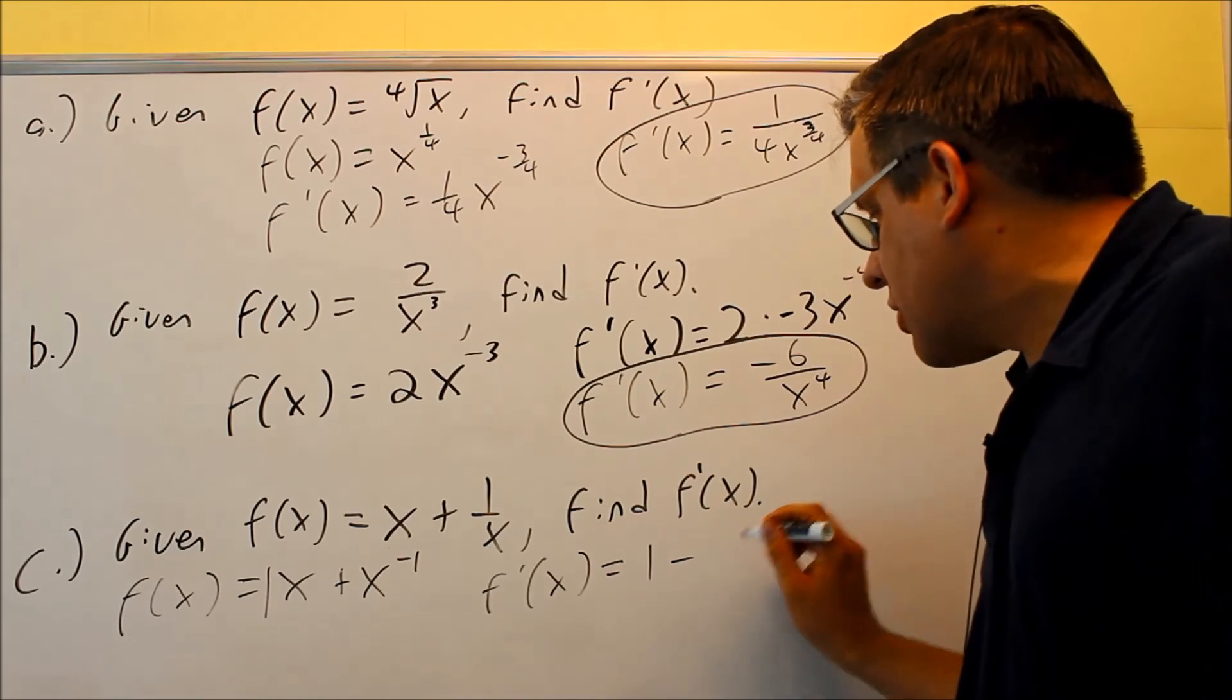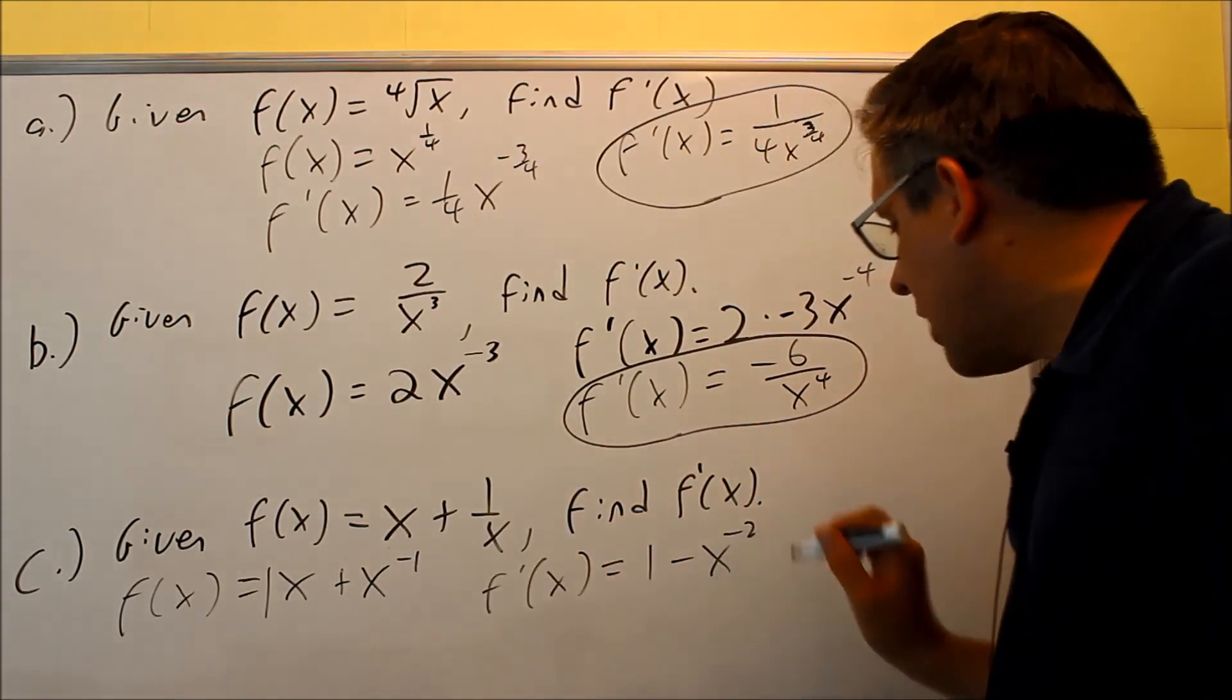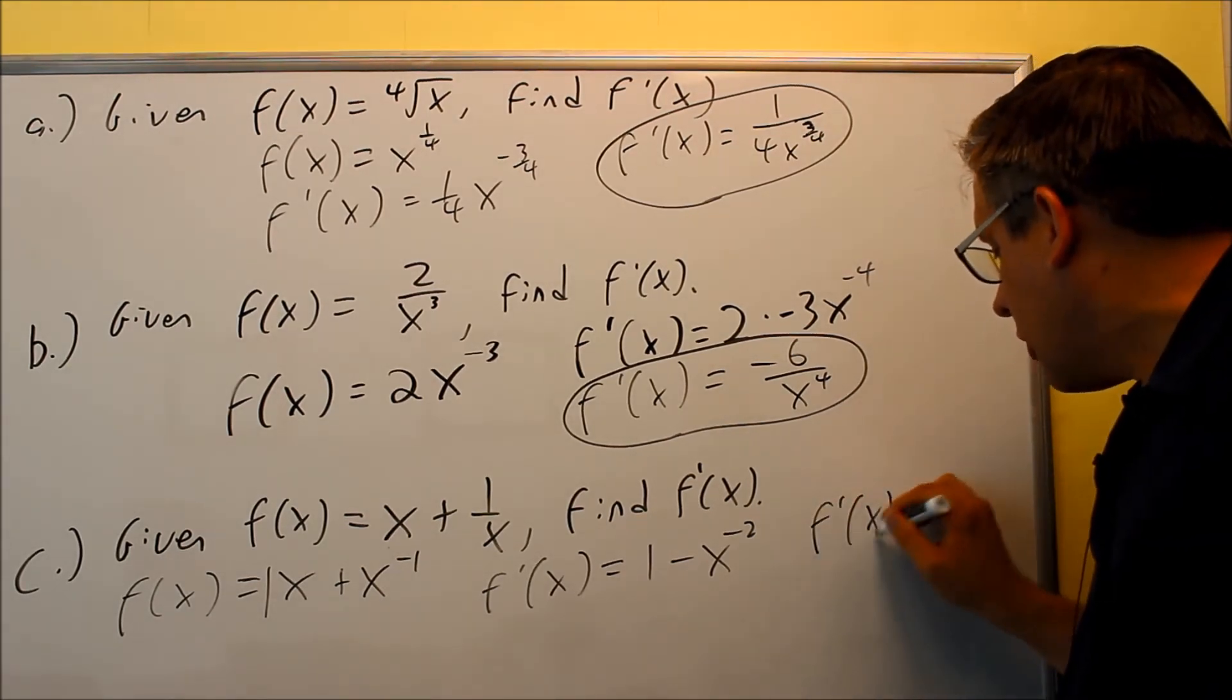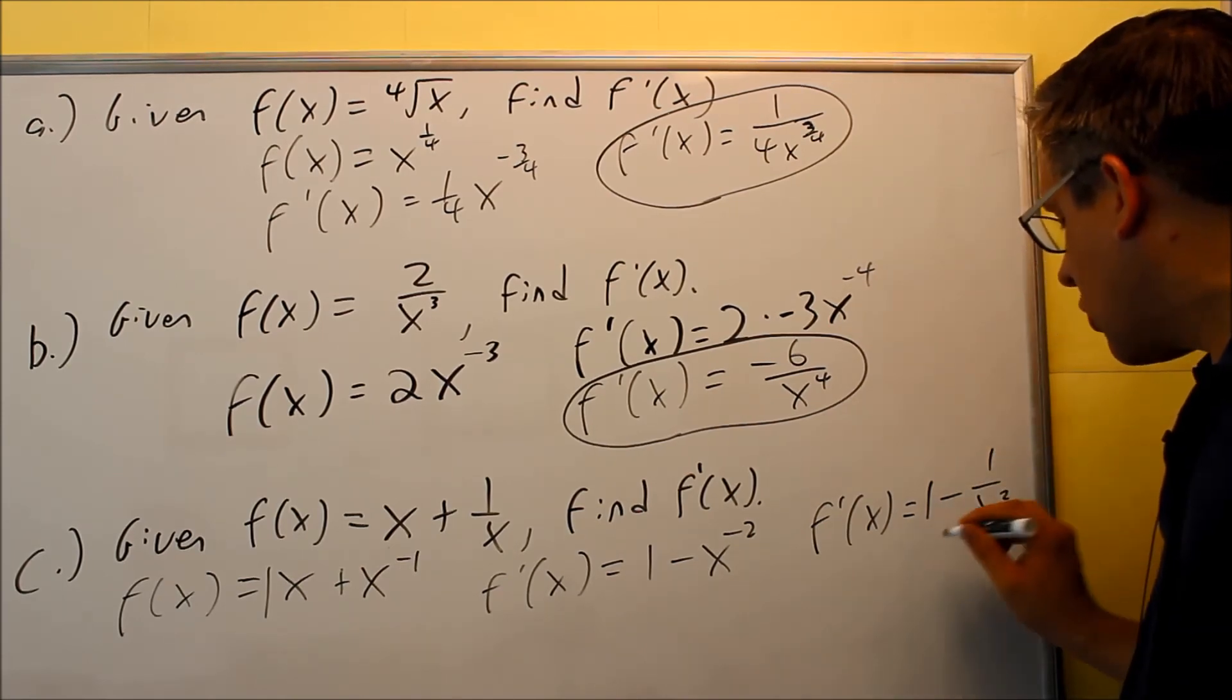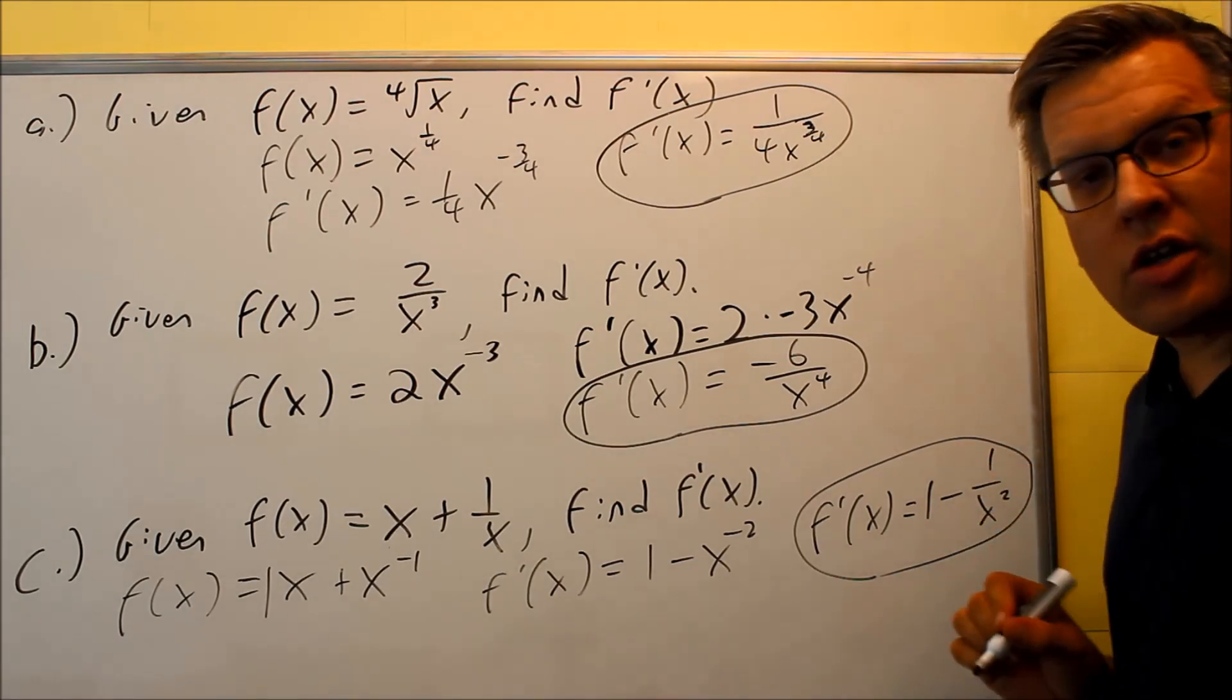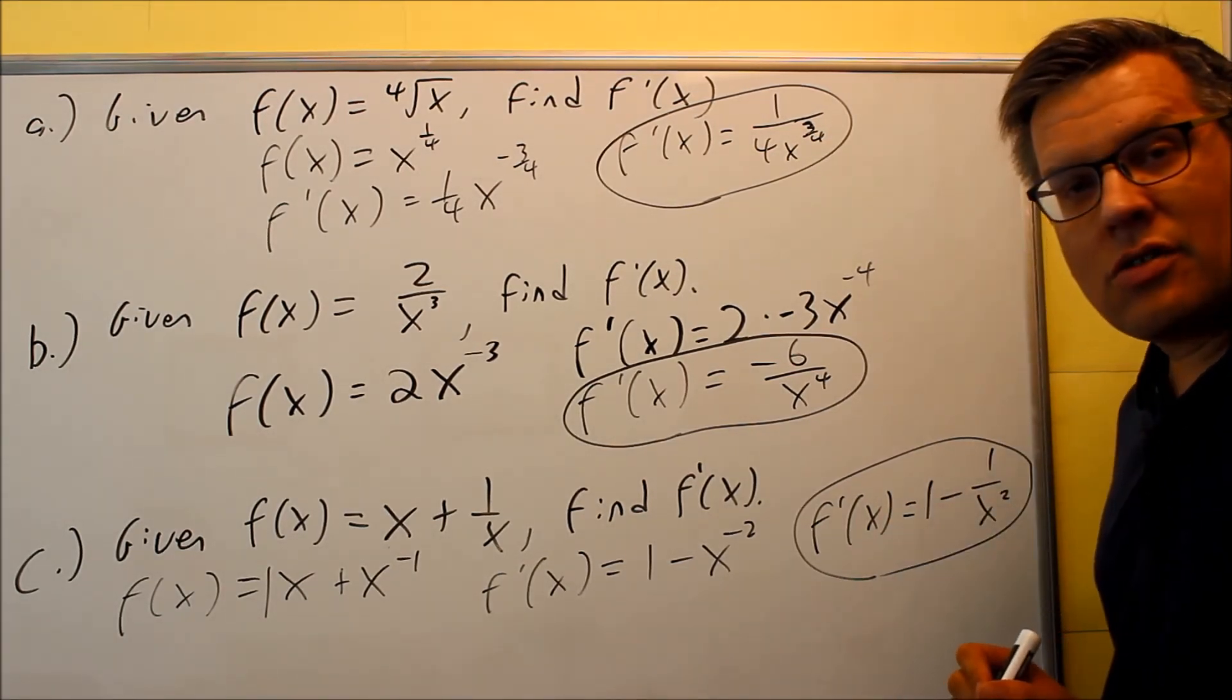This power comes down minus 1, subtract 1 from that power, that's going to be a minus 2. And we just change this back over to where we don't have any negative exponents, and you get 1 minus 1 over x squared, and that would be your answer on that one. You don't need to worry about getting common denominators. It's okay to leave your answer just like that as it is.